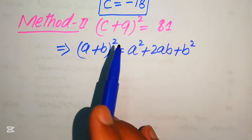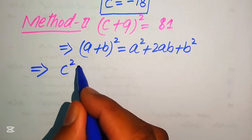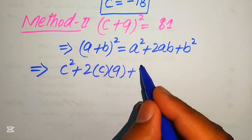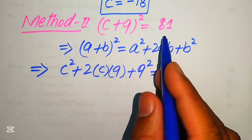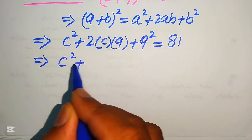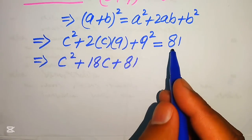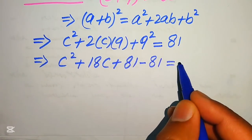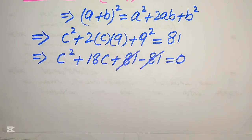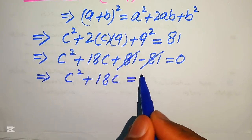Applying this formula, the left hand side becomes c² + 2 times c times 9 + 9², which equals 81. Simplifying: c² + 18c + 81 equals 81. Moving 81 to the left hand side, the 81 terms cancel and we get c² + 18c equals 0.